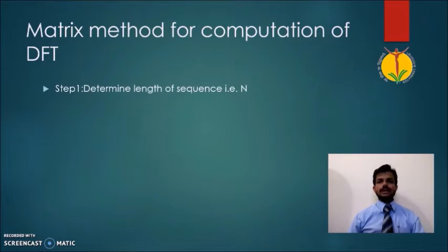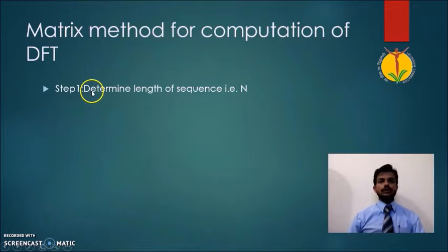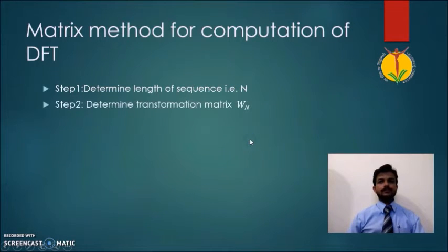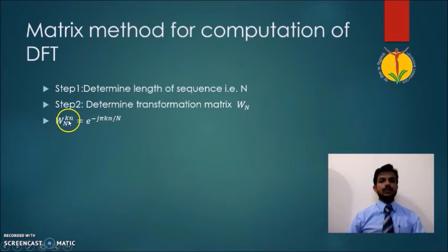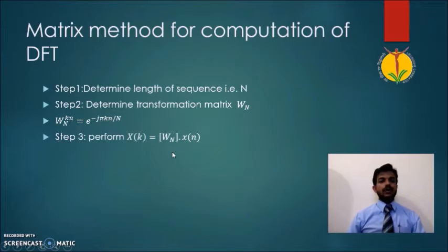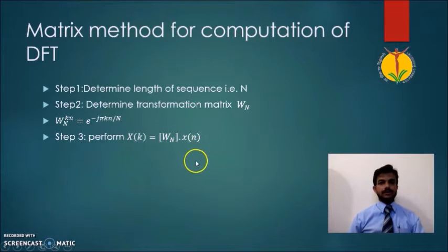There are two methods for computing the DFT of a given sequence: the matrix method and the standard formula method. For the matrix method, the first step is to determine the length N of the sequence. The second step is to determine the transformation matrix W_N, where the twiddle factor is W_N^(nk) = e^(-j2πkn/N). We then perform the multiplication of the transformation matrix and the input sequence matrix, which directly gives us the DFT of the sequence.